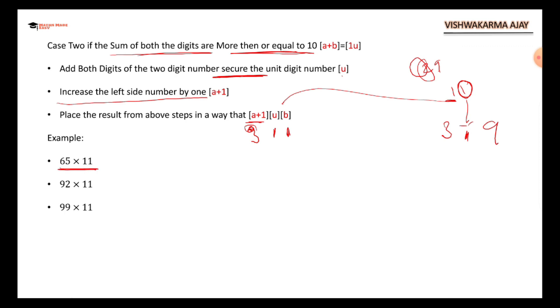65 times 11. 6 plus 5 is 11. So I am going to increase, that is A plus 1. 6 plus 1, that is going to be 7. 6 plus 5 is 11, but the unit place has only 1, and the last is 5. That's it, my answer is here.